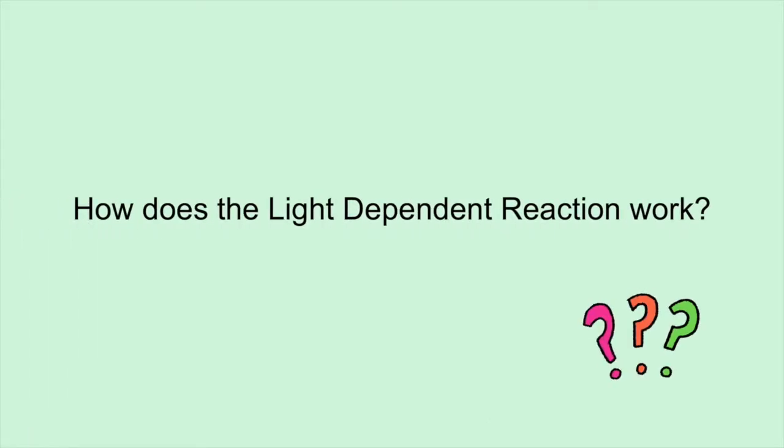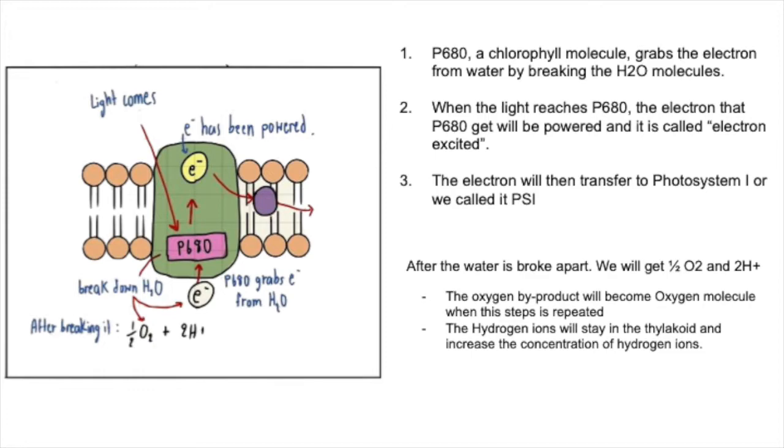How does the light-dependent reaction work? We have to look at the first step. It begins inside the PS2 or Photosystem II. There is a chlorophyll molecule called P680. P stands for pigment, and 680 stands for 680 nanometer because these molecules absorb the best when the light is 680 nanometer. It grabs the electrons from water by breaking the H2O molecules. After the water molecule is broken down, we will get one-half of O2 and 2 H+.